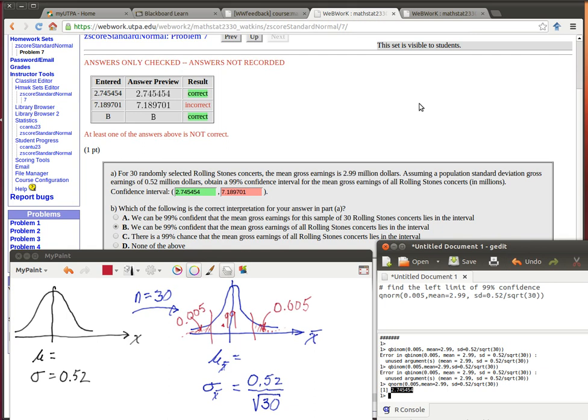We want a 99% confidence interval. I'm not going to talk in this video about what a 99% confidence interval means, I'm just going to talk about how to actually do the calculations to find it.